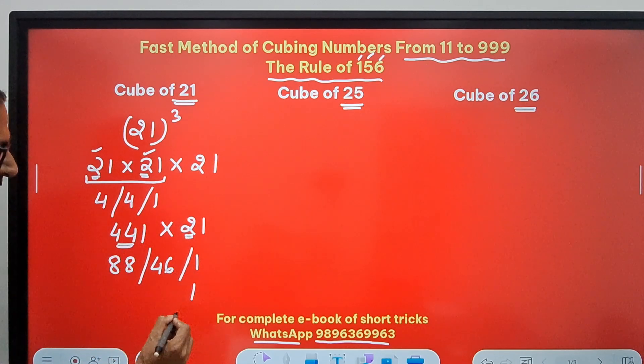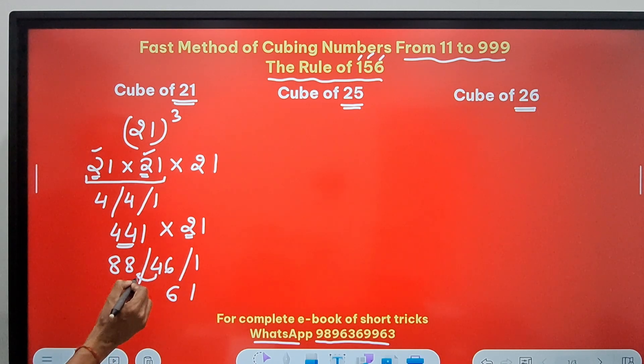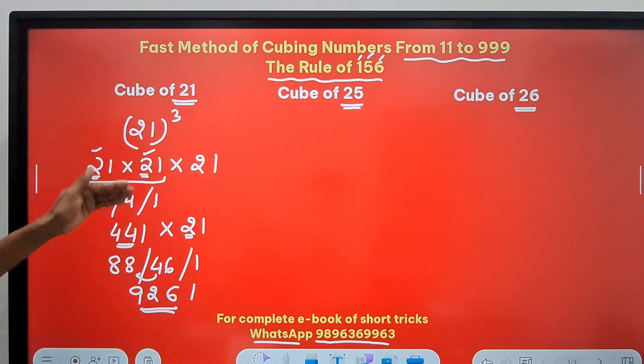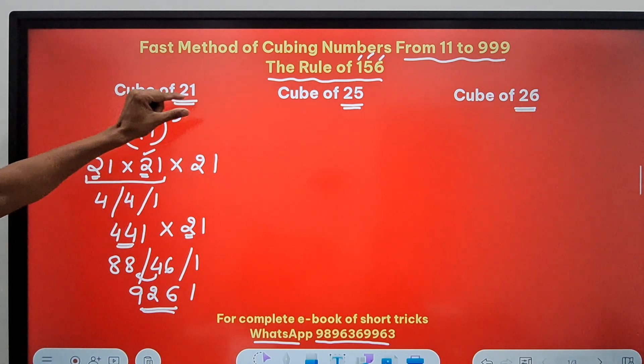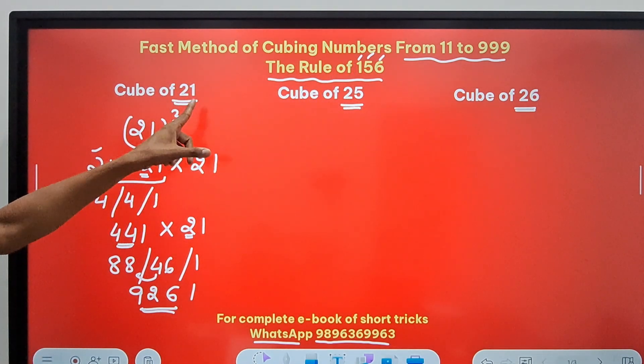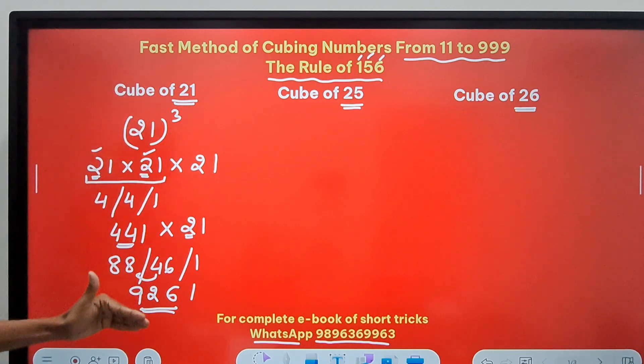Now I need to do this again because I have another 21. So ending in 1, and then 44 plus 2 is 46, and 44 times 2 is 88. Retain the 1, retain the 6, carry forward the 4, 88 plus 4 is 92. So you get the cube of 21 as 9261. This is not going to consume much time. I am just telling you the rule. This is the rule of the numbers ending in 1. Cubing those numbers is done like this.